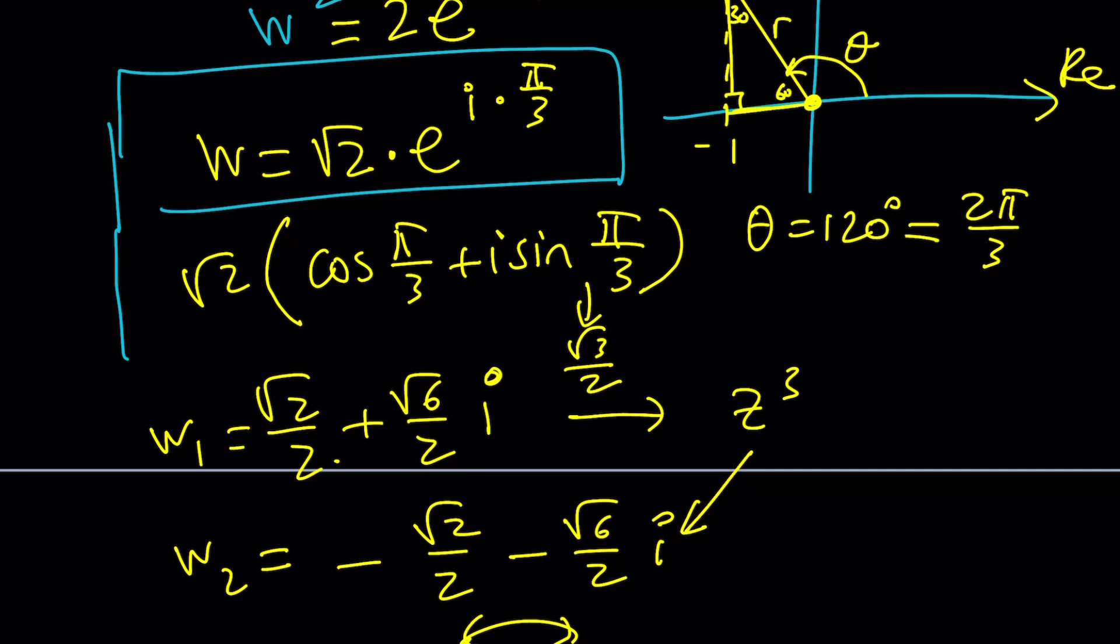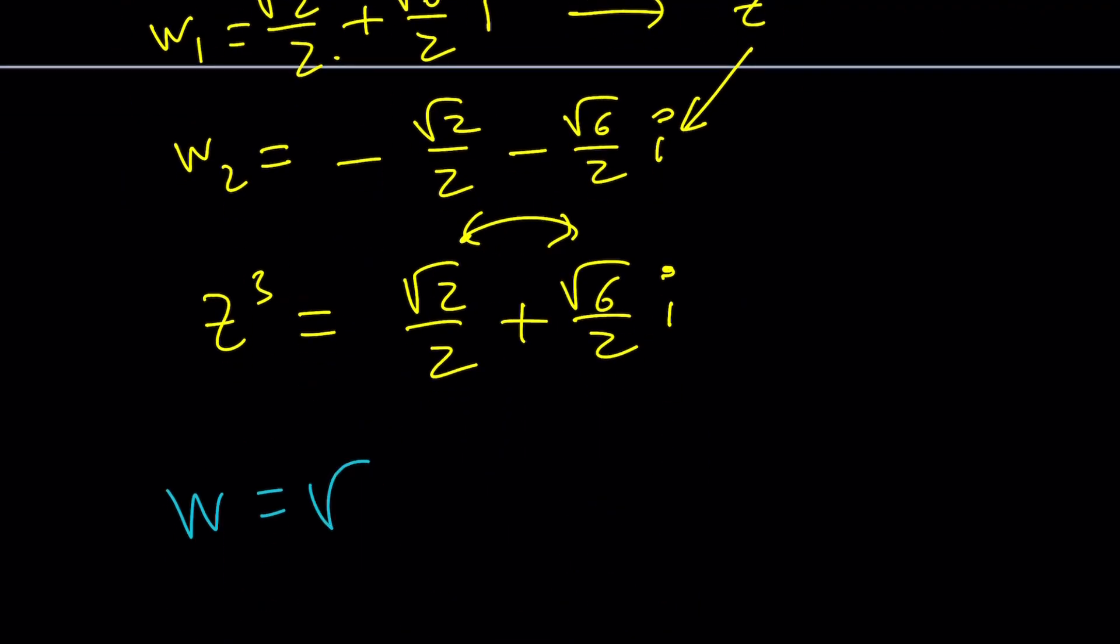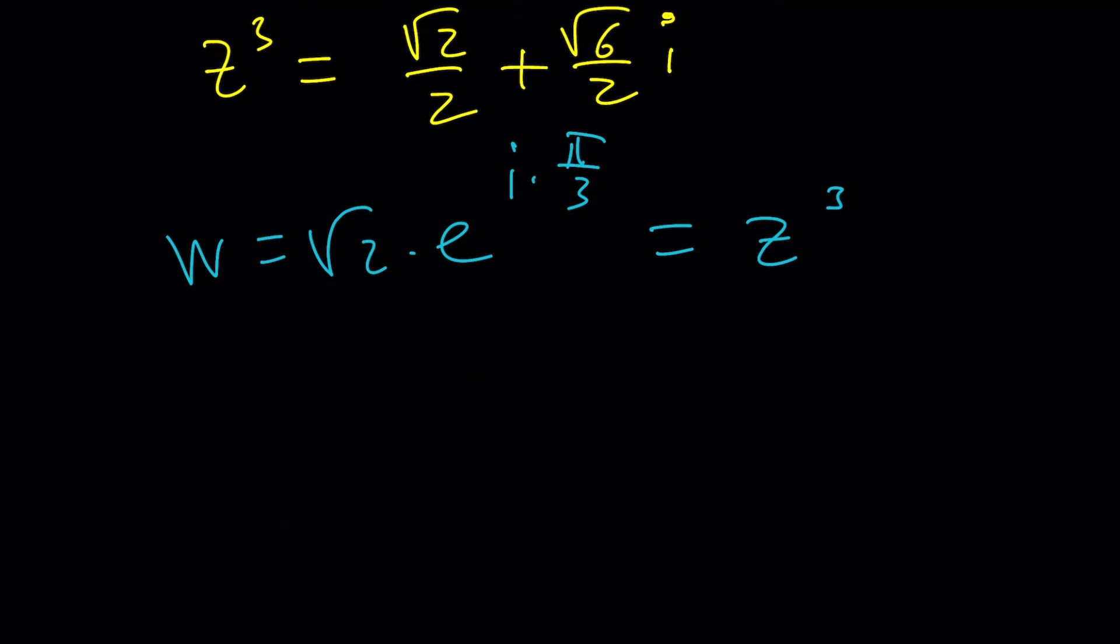Let's go ahead and use that. w is equal to root 2 times e to the power i pi over 3. And I'm supposed to find or set this equal to z cubed. In other words, the cube roots of this number. And to find the cube roots, here's the process. You take the cube root of the modulus, which is going to give you the sixth root of 2 from here. And then the angle is going to be cut in thirds. So it's going to be i times pi over 9.